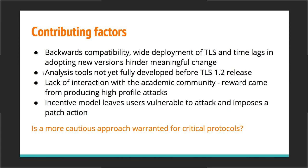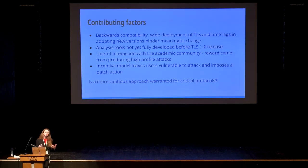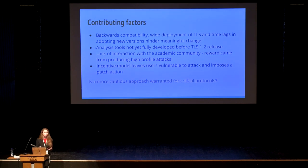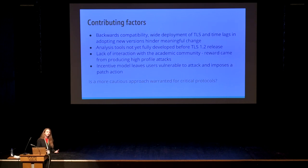Why was the process like this? Backwards compatibility was very important, and the wide deployment of TLS with time lags in adopting new versions hindered meaningful change. Protocol analysis tools were not mature prior to TLS 1.2's release in 2008, so they couldn't be used in an ongoing standardization process. There was also arguably a lack of interaction between the TLS working group and the academic community — reward for academics came from attacking already-deployed standards, leaving users vulnerable and imposing a patch burden on the working group.